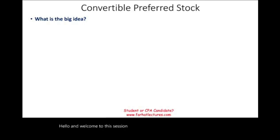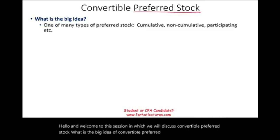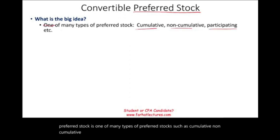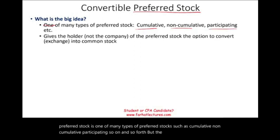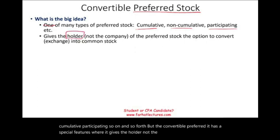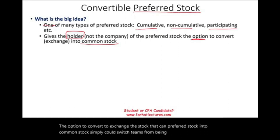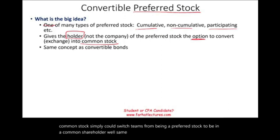Welcome to this session on convertible preferred stock. Convertible preferred stock is one of many types of preferred stock, such as cumulative, non-cumulative, and participating. The convertible preferred has a special feature where it gives the holder — not the company issuing it — the option to convert, or exchange, the preferred stock into common stock. Simply put, you switch from being a preferred stockholder to being a common shareholder — the same concept as convertible bonds.